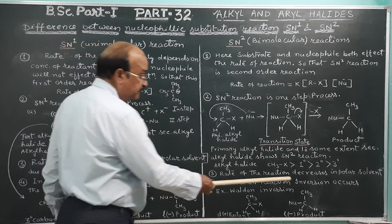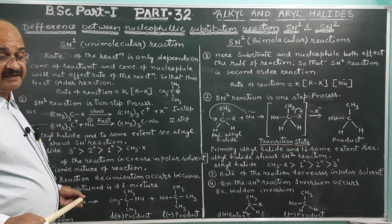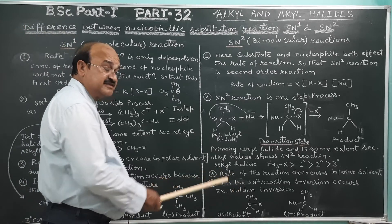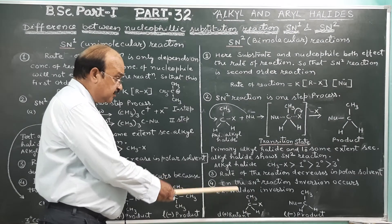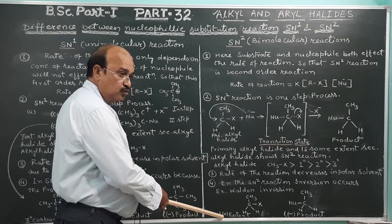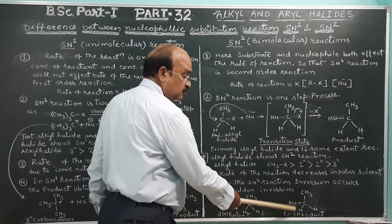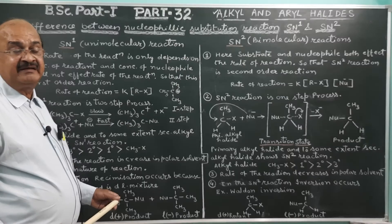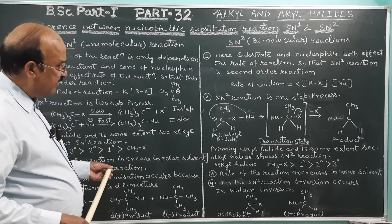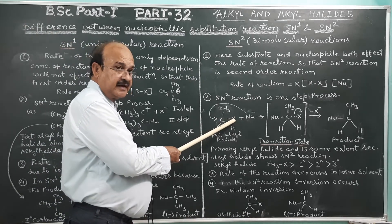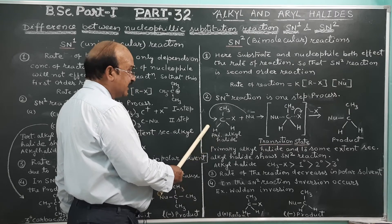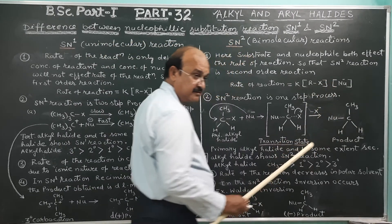In SN2 reaction, inversion of configuration occurs — known as Walden inversion. The reactant is dextro while the product is levo. The optical activity is inverted. The halogen atom is on one side and the nucleophile attacks from the opposite side, causing the configuration to flip.